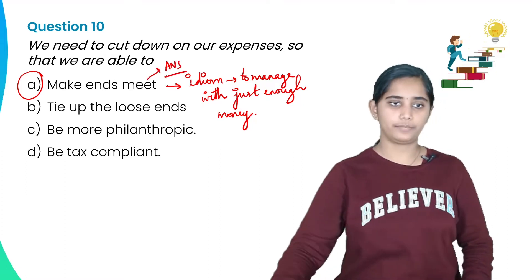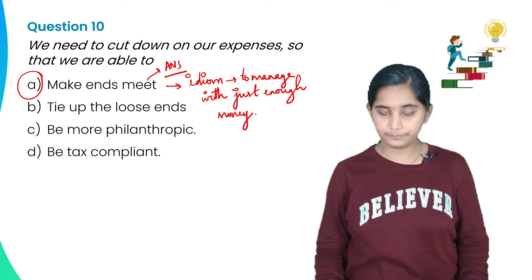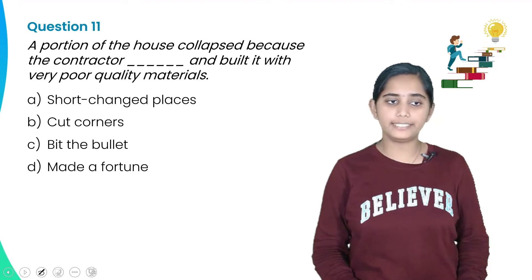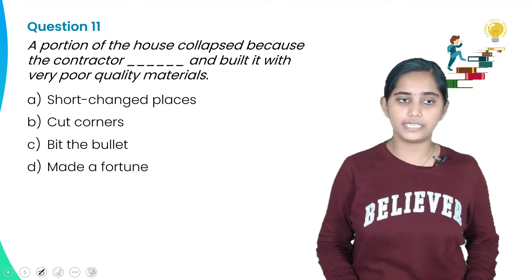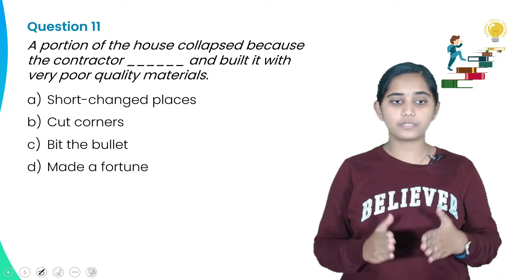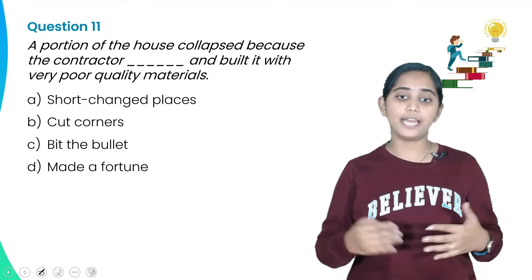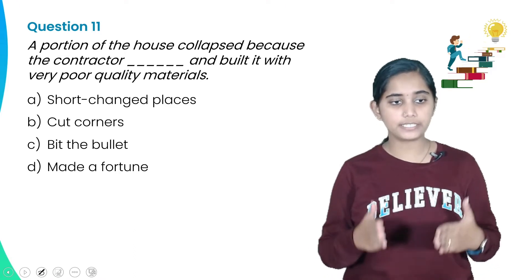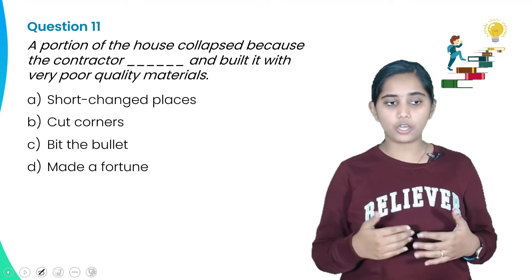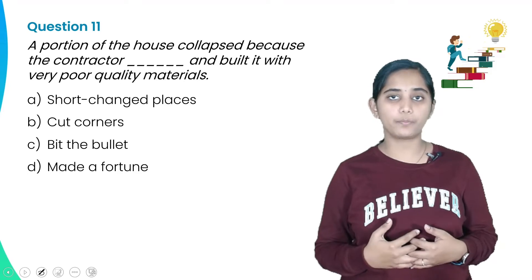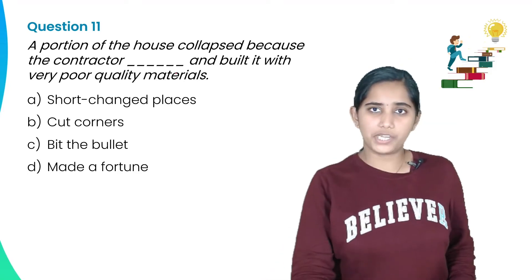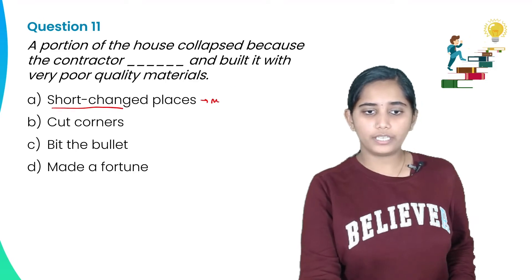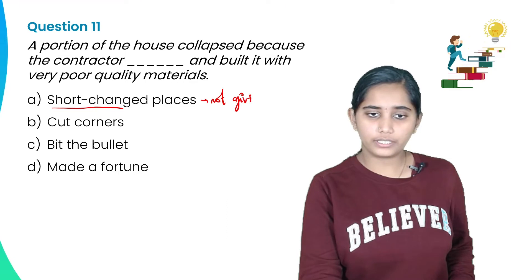Next question: 'A portion of the house collapsed because the contractor dashed and built it with very poor quality materials.' Options: A) short changed, B) cut corners, C) bit the bullet, D) made a fortune. 'Short changed' means not giving enough. Let's examine each option for the correct meaning.